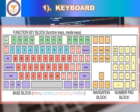A keyboard is connected to the serial or USB port on the system unit. Some keyboards do not require a cable — these are called wireless or cordless keyboards, which connect using wireless technology. In earlier times, keyboards came with 84, 101, or 102 keys, but nowadays keyboards come with 104 or 108 keys.